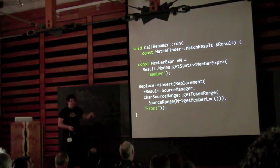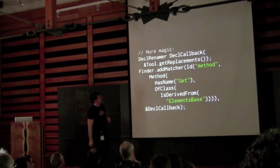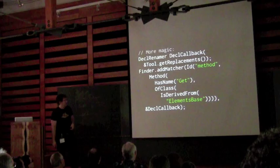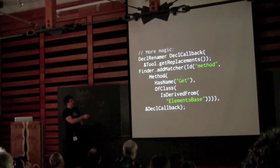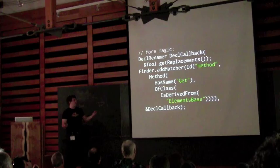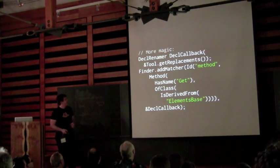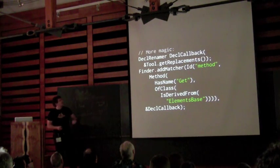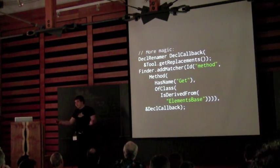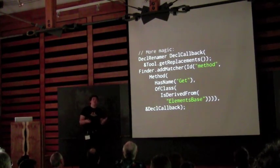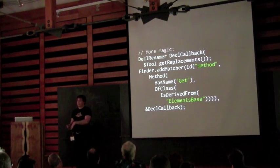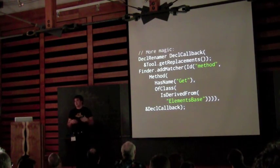We've written the call-side rewrite. But as someone mentioned, we don't want to just match calls — we need another matcher for declarations. This one matches declarations of the method: a method with name `get` that's a member of a class derived from `element_base`. We add this to the same finder. You can add as many predicates as you want to the finder; each is matched independently and the callback fires independently. This is particularly nice when you're matching in separate domains — one over expressions, one over declarations. They never collide, and doing them simultaneously is a big efficiency win.